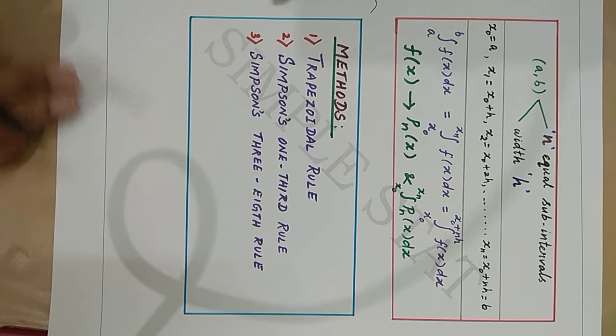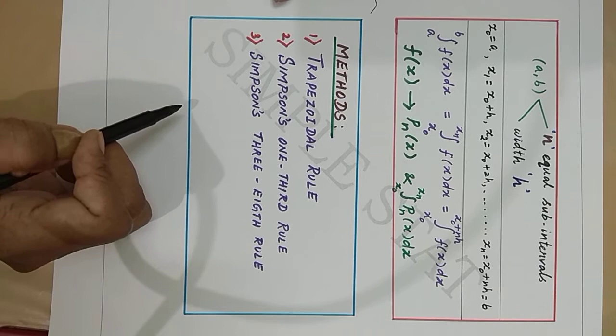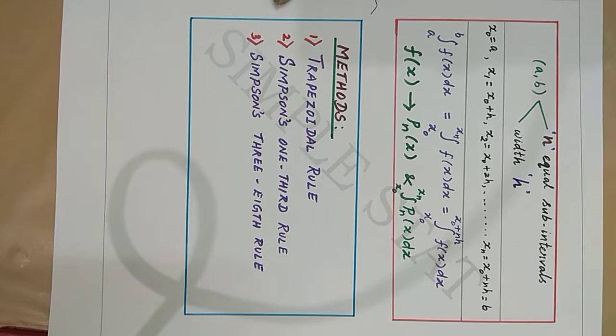Here I have listed three methods, and we shall discuss all these in the upcoming videos: trapezoidal rule, Simpson's one-third rule, and Simpson's three-eighth rule.